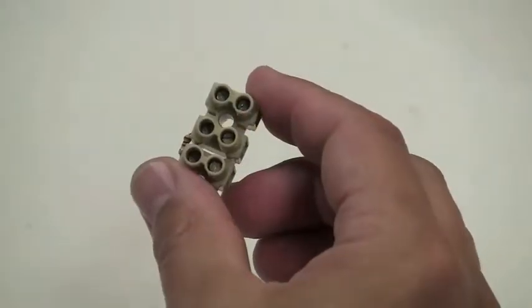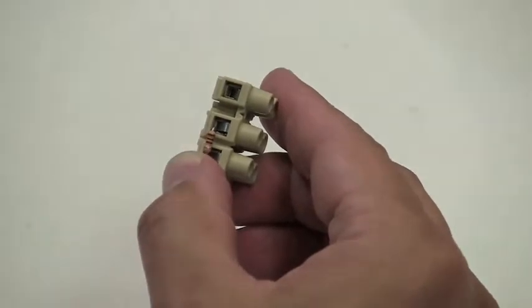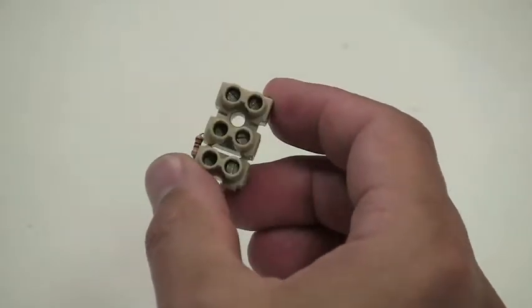First, make sure the terminal block has the jumper wired in, and hold it so the jumper is facing your left, and the terminal screws are facing up.